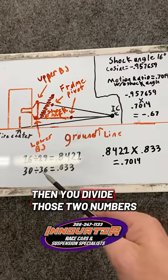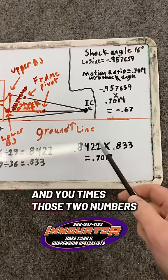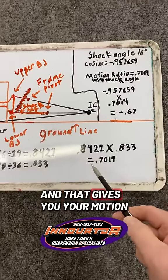Then you divide those two numbers. So then you come over here and you times those two numbers together and that gives you your motion ratio.